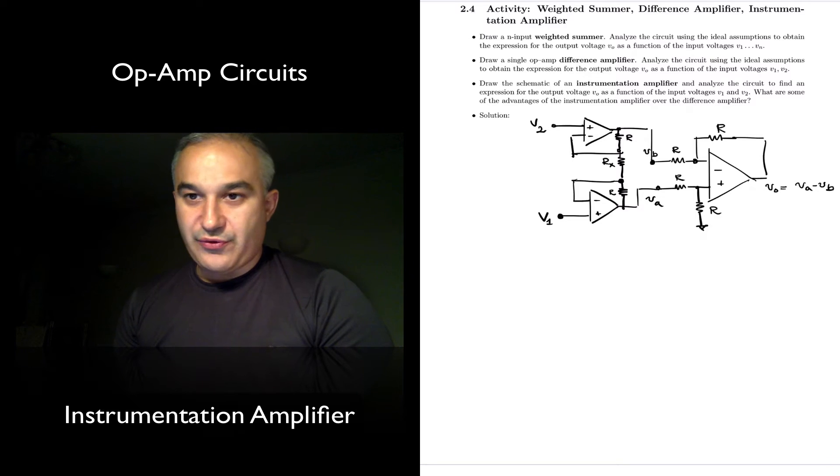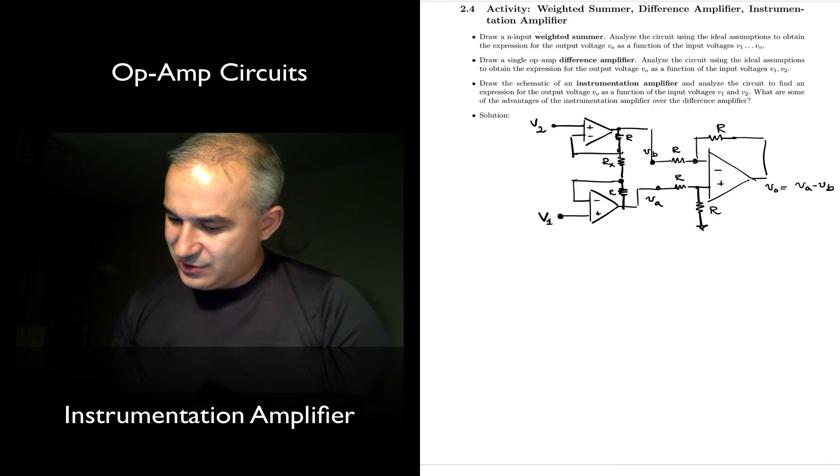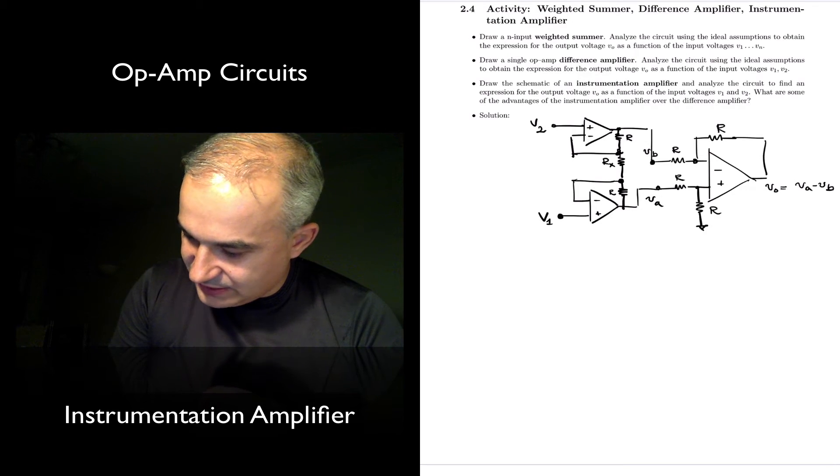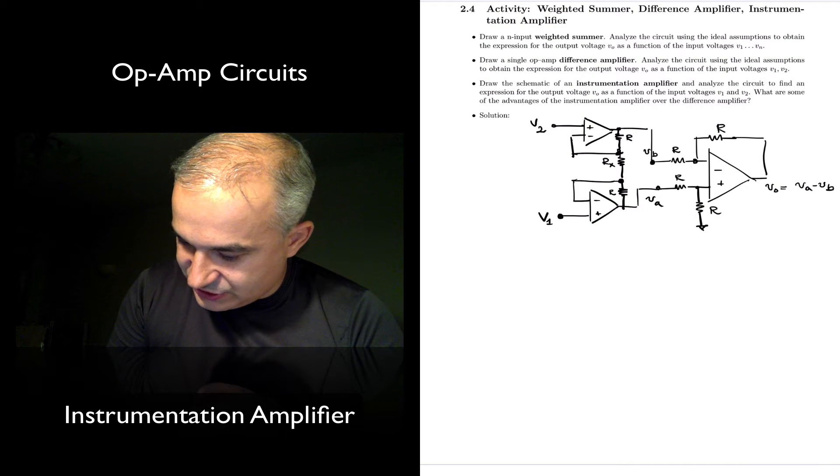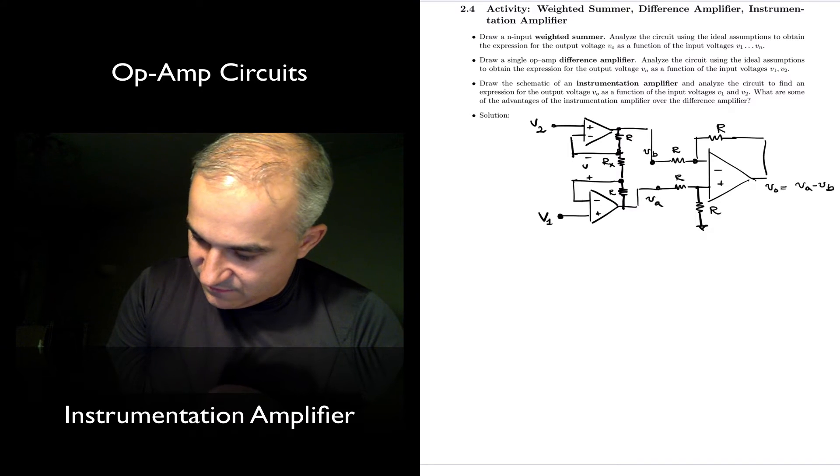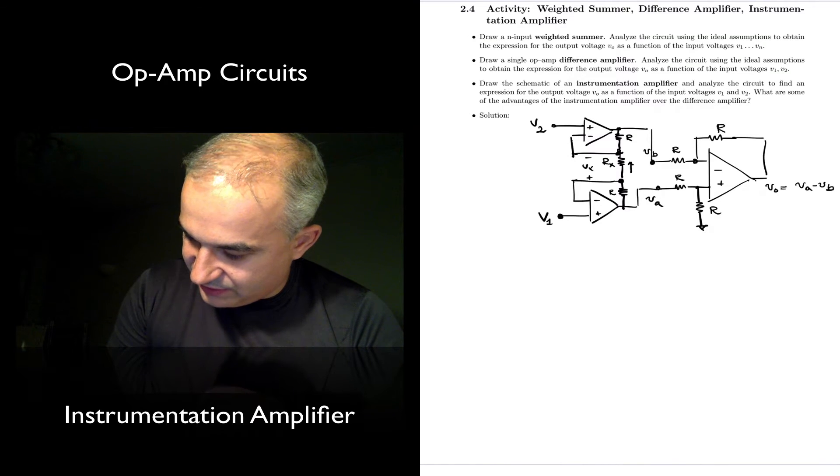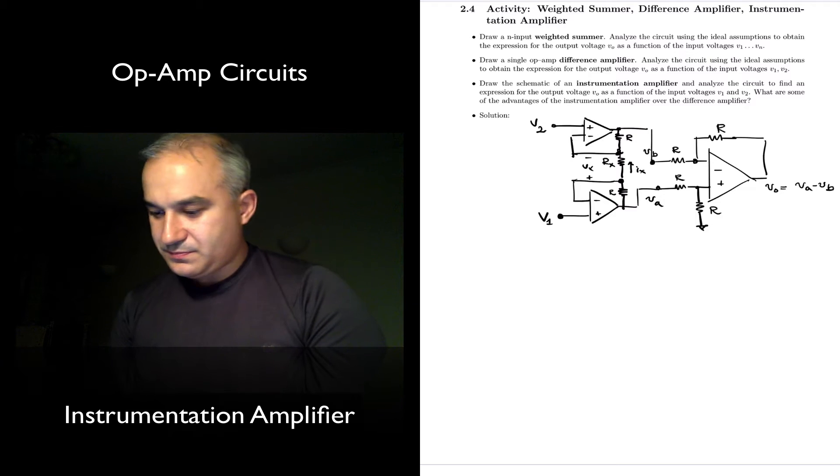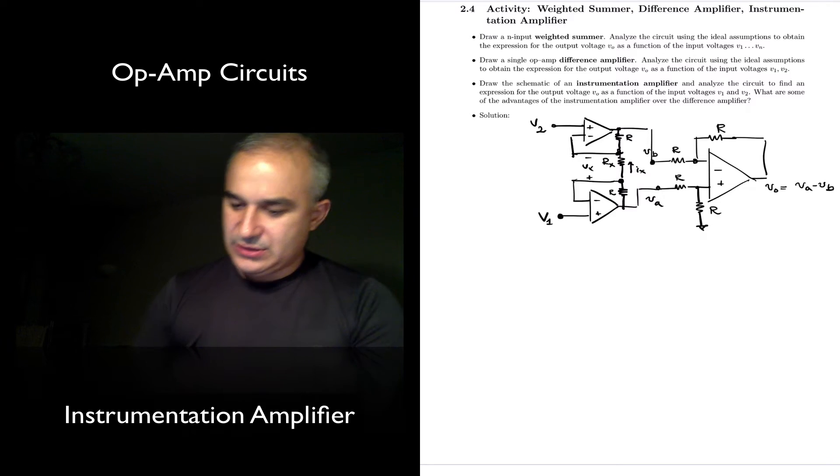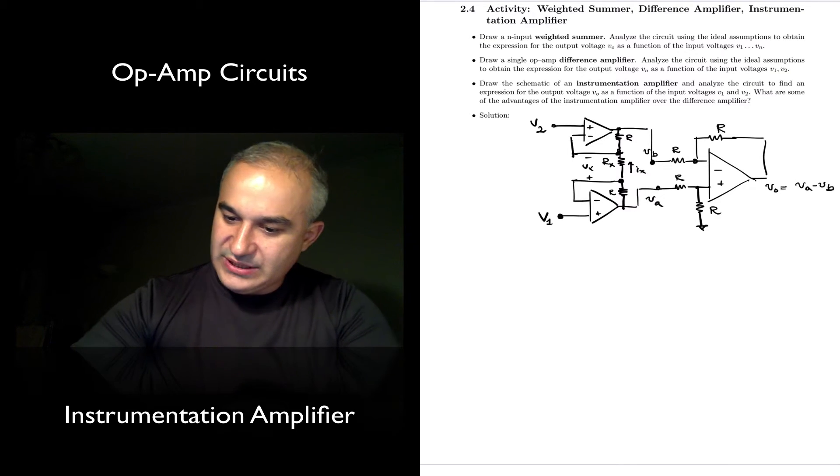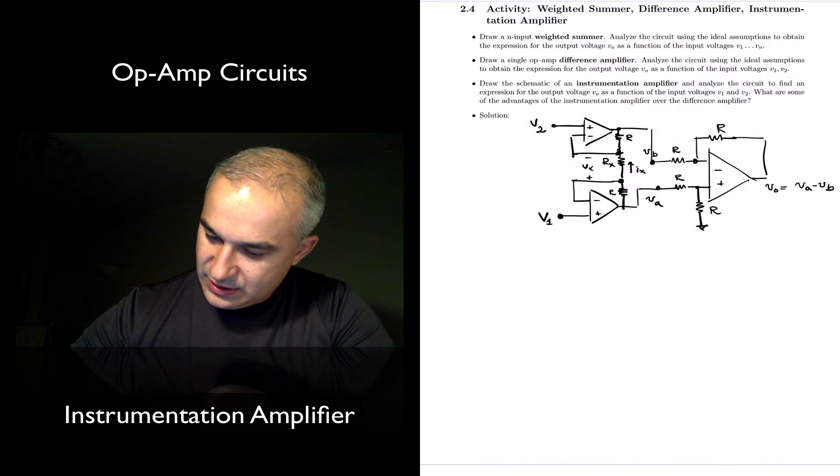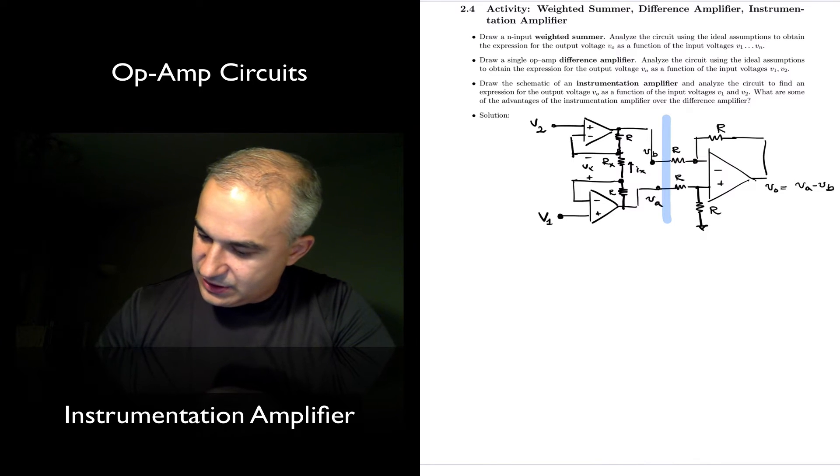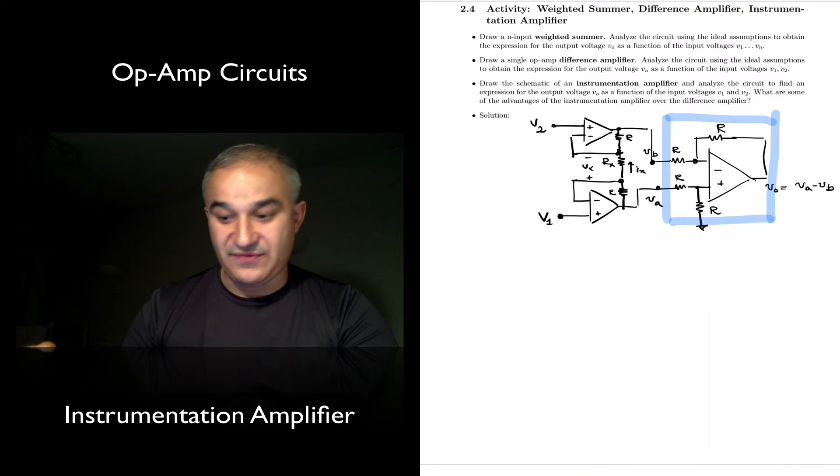And that improves the common mode rejection ratio. So let's go ahead and do this analysis. Let me label a couple of things. So this is Va. I'm going to call this voltage Vx, and therefore this current Ix. So in order to do this analysis, we can think of the initial stage here.